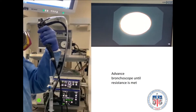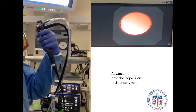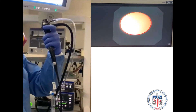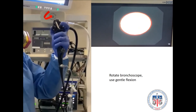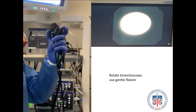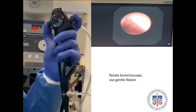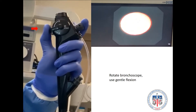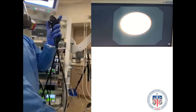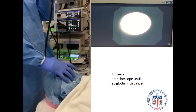Instead, we will perform a rotation maneuver with the scope to position the EVAS probe anteriorly at the 12 o'clock position, as seen in the video, and apply gentle anteflexion. This will align the scope to follow the lining of the nasal airway and allow it to advance into the oropharynx until the epiglottis is visualized.